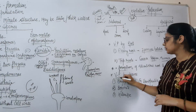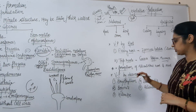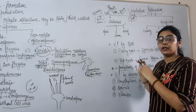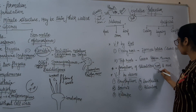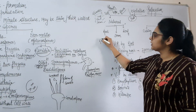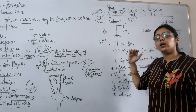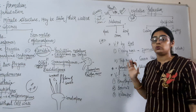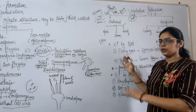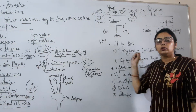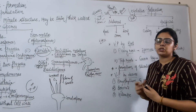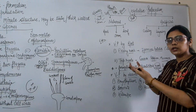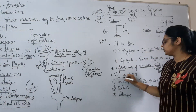Next is vegetative propagation by leaves. We have studied adventitious roots. Adventitious roots are roots that arise from parts other than the radicle. A simple root is formed from the radicle, but adventitious roots are formed from other parts of the plant. For vegetative propagation in roots, buds are necessary — when buds form, roots develop from elsewhere, and those are called adventitious roots.